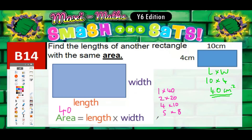We've already got 4 times 10, so we'll cross that one out because we don't want to give that answer again. Any of the other answers could work. So it could be 40 by 1, or 20 by 2 — that would also give you 40 — or 8 by 5, which also gives you 40. Any of those dimensions would be correct answers.